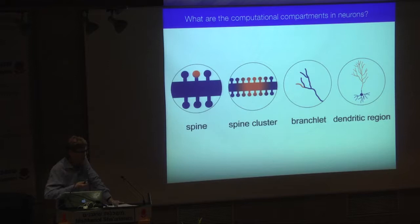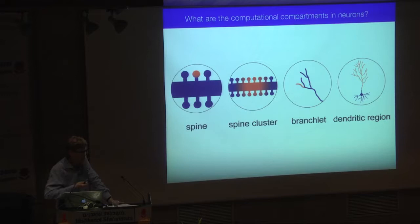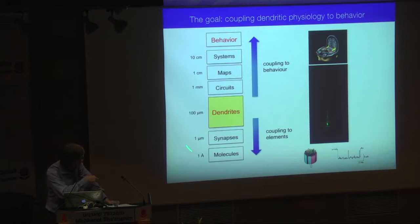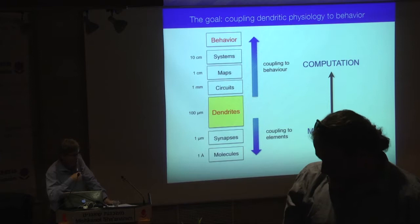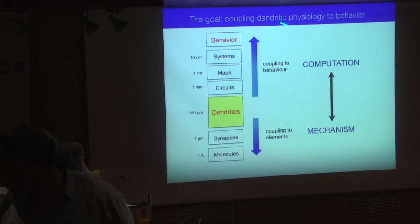In order to ask which of these levels might implement computational rules relevant to behavior, it's important to integrate between levels. We need to connect mechanisms on the cellular level to what's actually going on in behavior — to see which mechanisms might reveal computational principles useful for specific behavioral tasks. It's important to define what kind of computations we're interested in.